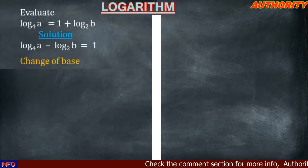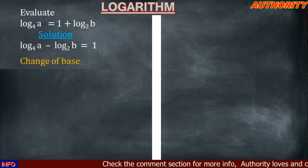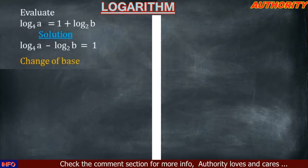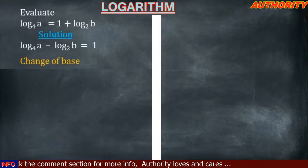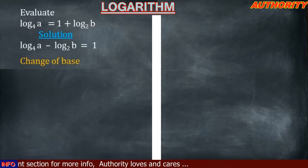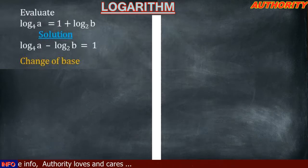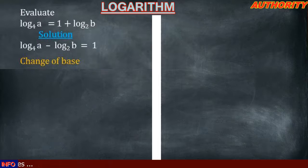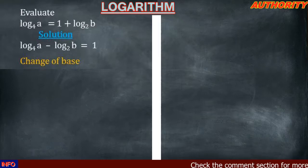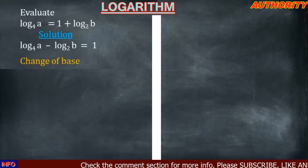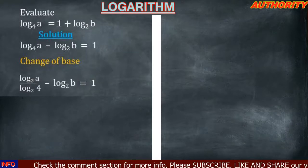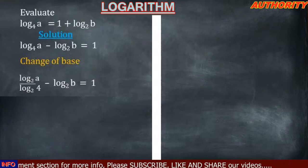We're going to apply the change of base formula and change everything to base 2. The law of change of base says: when you have log a base b and want to change it to base x, it gives you log a base x all over log b base x. Applying that here, log a base 4 becomes log a base 2 all over log 4 base 2, minus log b base 2 equal to 1.